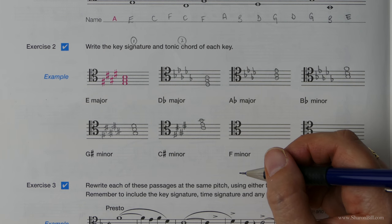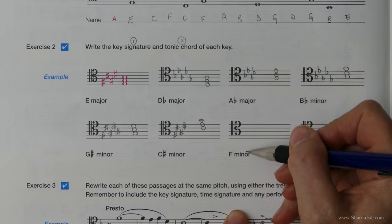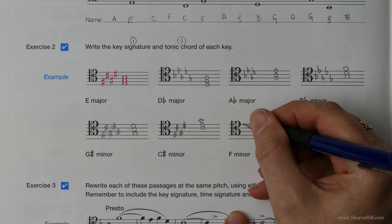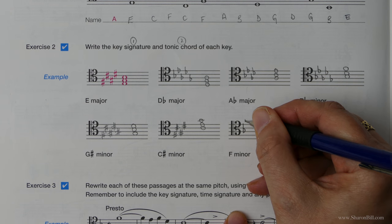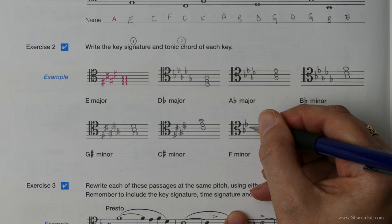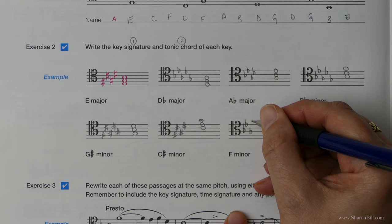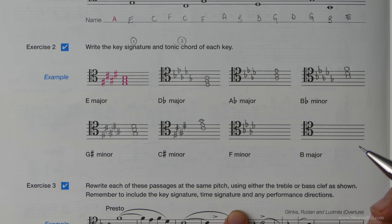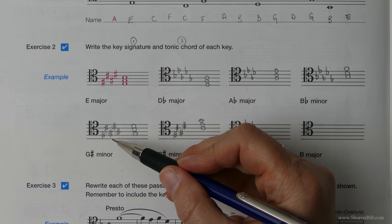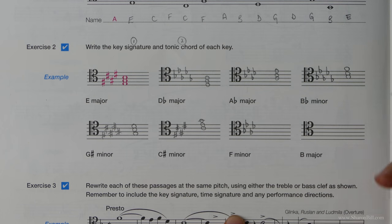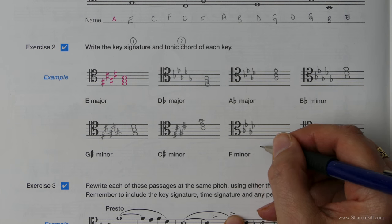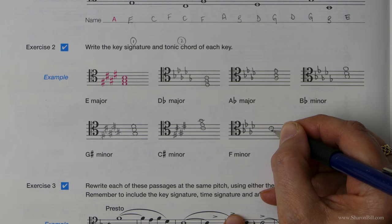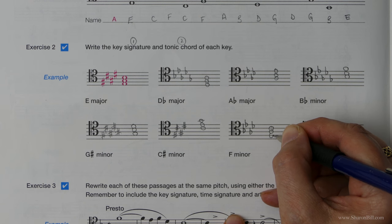So F minor is related to A flat major. So we just need this key signature again here. So there's our B flats, E flats, C, B, A flats, and then D flats, C, D. That's that. That's it, yeah. And then we know the triad is F, A, C, so our top note is C, and we can work it backwards. There we go.